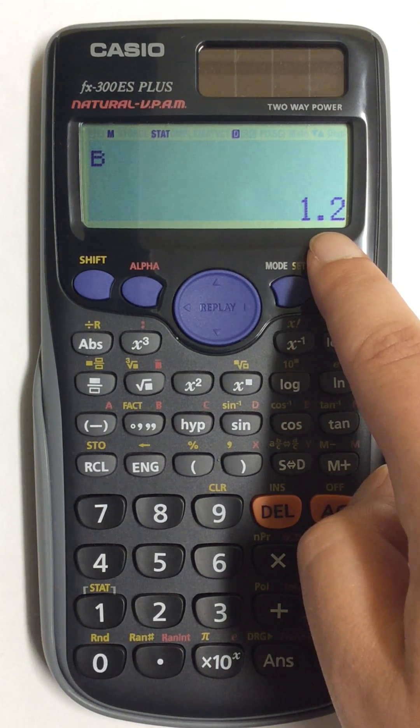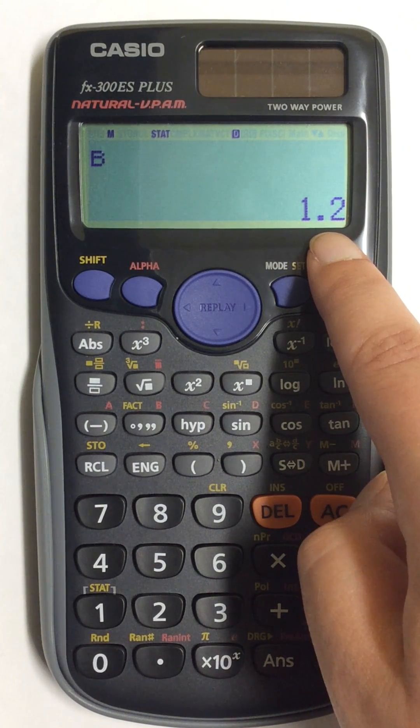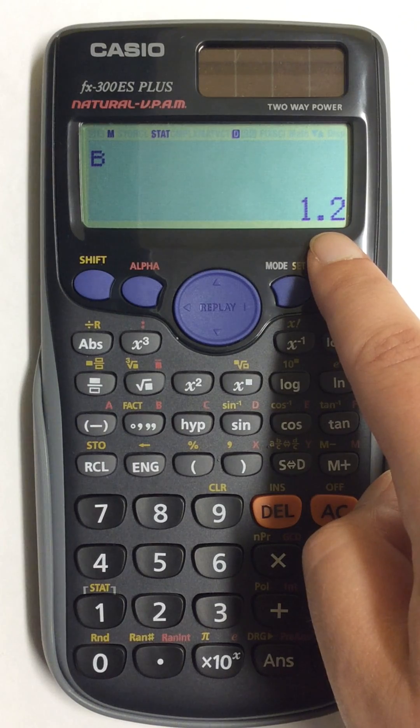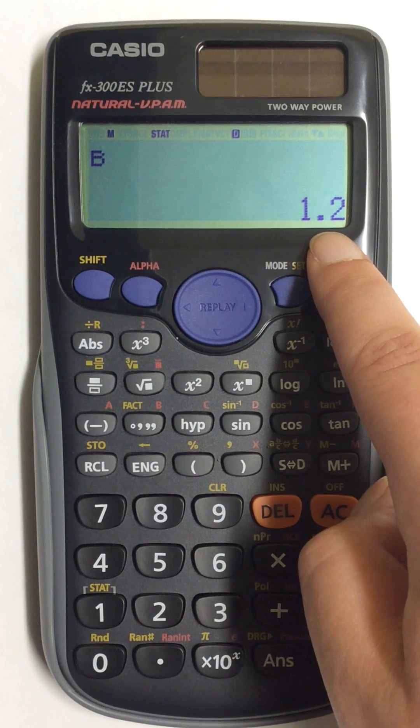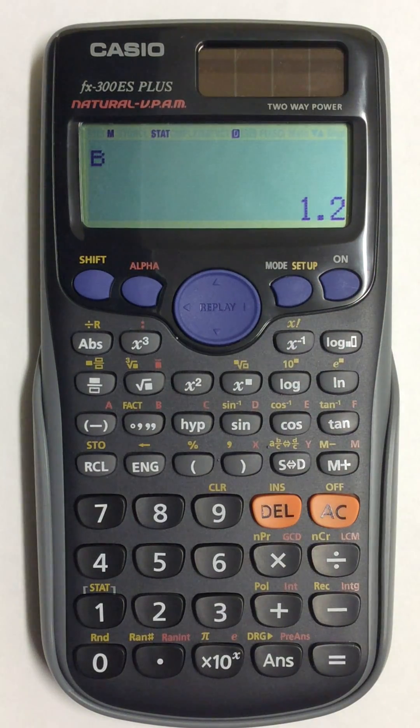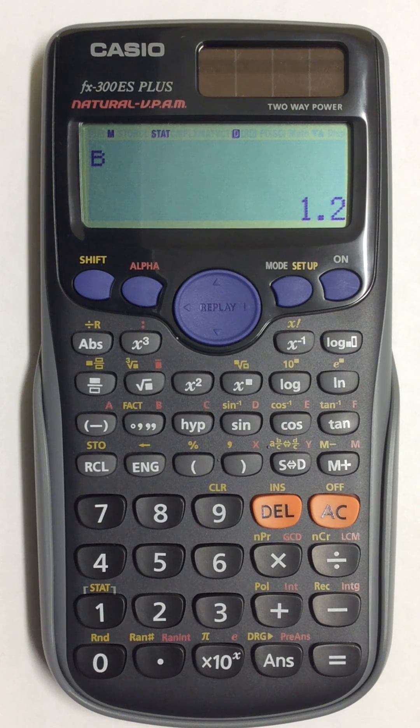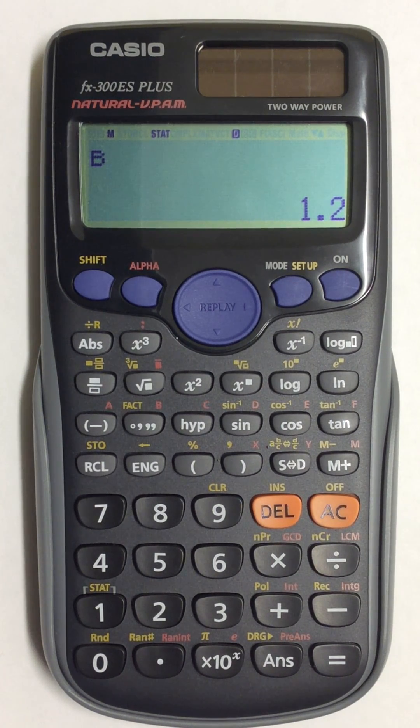So I can take those two values and write them in for my y-hat, or my regression line equation. So this is how to find the values for a regression line in a scientific calculator.